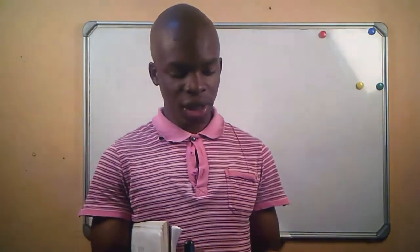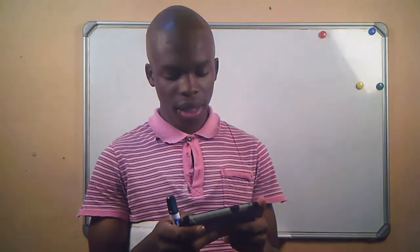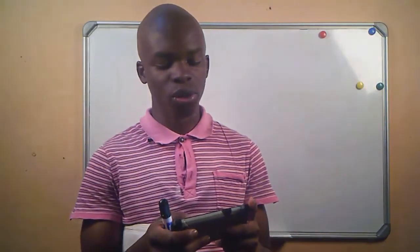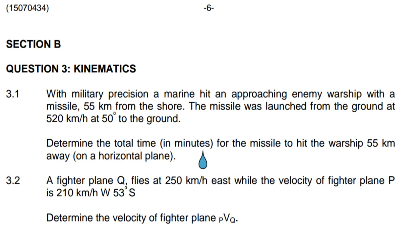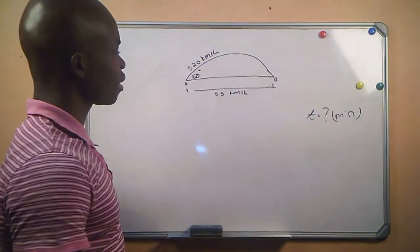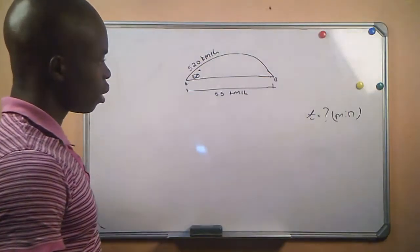The question we are doing today is taken from a question paper written on 21 November 2019 — question number three. It reads as follows: with military precision, a marine hit an approaching enemy warship with a missile 55 kilometers from the shore. The missile was launched from the ground at 520 kilometers per hour at 50 degrees to the ground. Determine the total time in minutes for the missile to hit the warship 55 kilometers away on a horizontal plane.